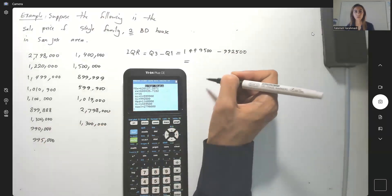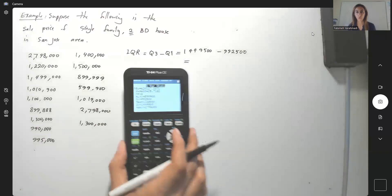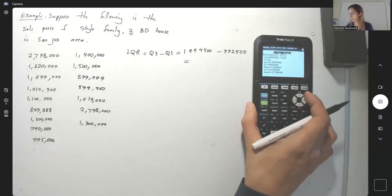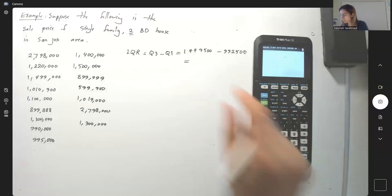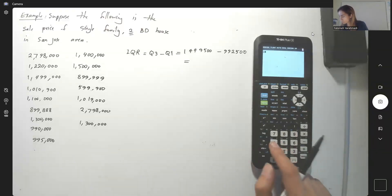After finding this number, you're going to multiply it by 1.5. So let us do the subtraction here. What I'm going to do, let me just clear the whole thing and here I have 1,449,500 minus 999,925.